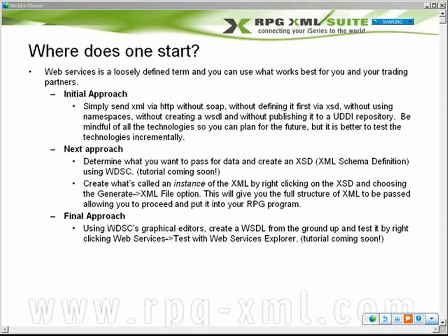Once you're comfortable with that, go ahead and create an XSD for your XML. Start defining the different data types for each element and attribute within your document, so it's easier to hand off that document to a business partner and say, here's my XML document, here are the data types within it. You can even right-click on an XSD from WDSC and it'll produce an instance of that XML, which makes it easy for your trading partner to get a realistic view of exactly what that XML document looks like.